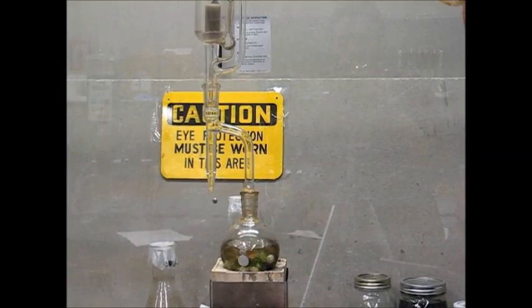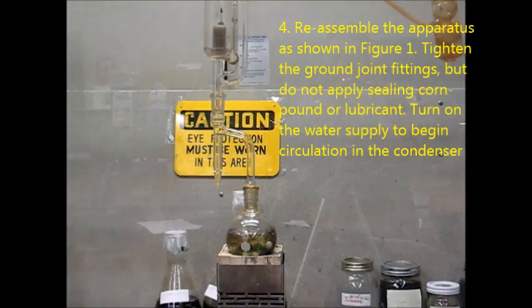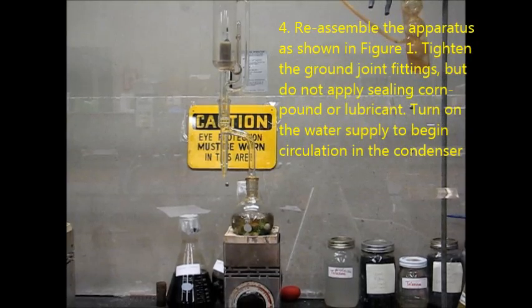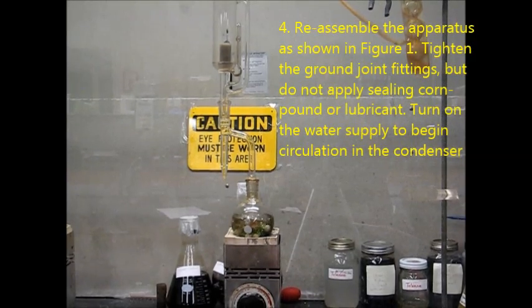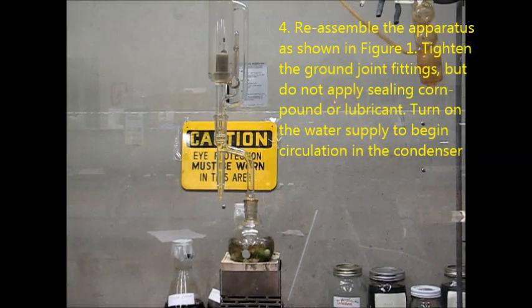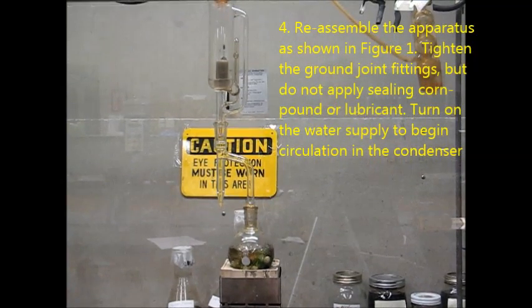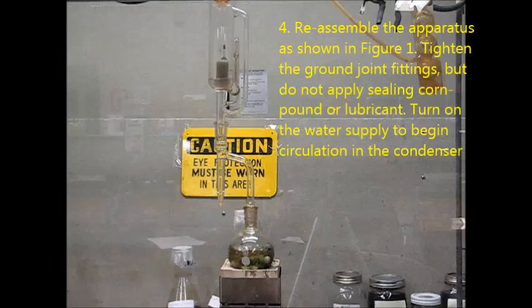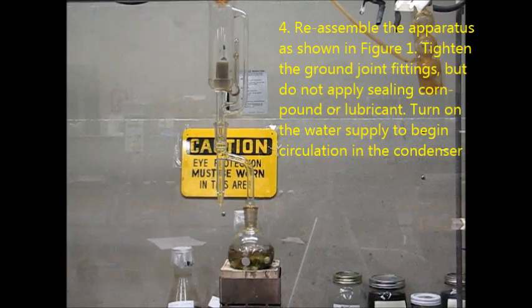So after weighing the sample, our next step is to place the sample into the Soxhlet extraction tube. Then we'll reassemble the apparatus as shown in Figure 1. Tighten the ground joint fittings but do not apply sealing compound or lubricant. This has already been done for us for sake of time.